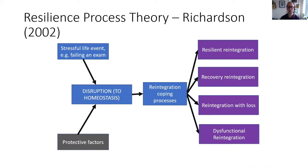This is a theory that was influential on how we conceived resilience. It's a process theory developed by Richardson in 2002. In essence, we're talking about a process which looks at disruption, homeostasis, and resilient or recovery reintegration based on the deployment of coping processes. It very much conceives of resilience as a process.